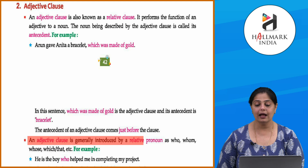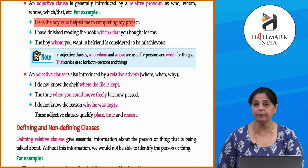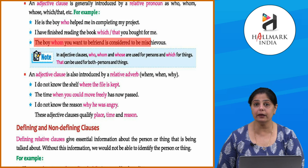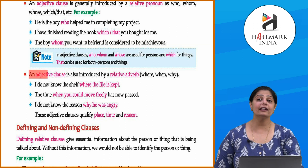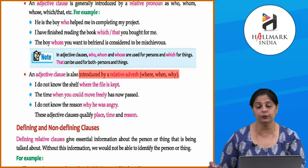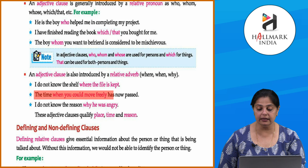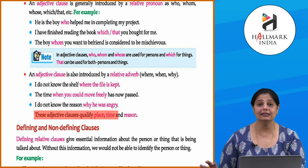An adjective clause is generally introduced by a relative pronoun such as who, whom, whose, which, or that. For example: 'He is the boy who helped me in completing my project.' 'I have finished reading the book which you bought for me.' 'The boy whom you wanted to befriend is considered to be mischievous.' Note: who, whom, and whose are used for persons; which is used for things; and that can be used for both persons and things. An adjective clause may also be introduced by relative adverbs — where, when, and why.